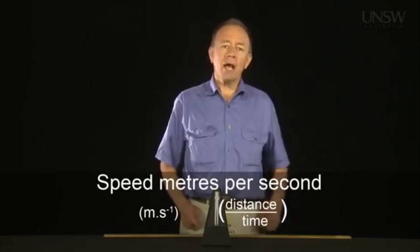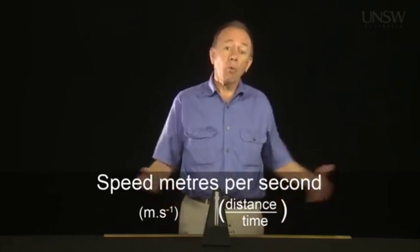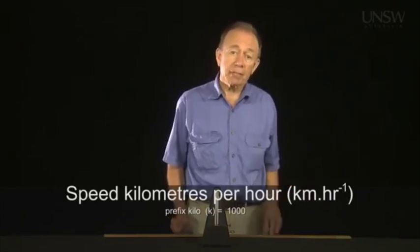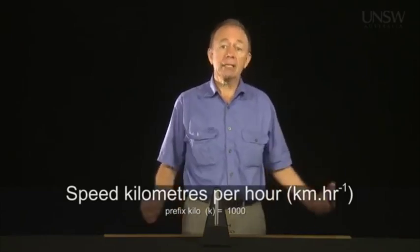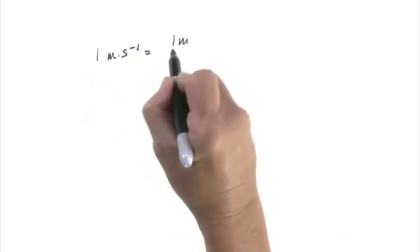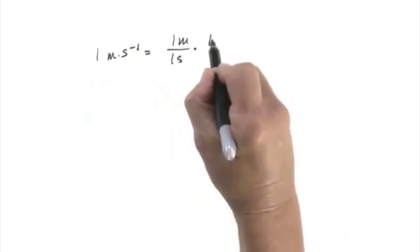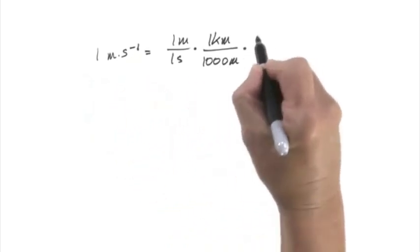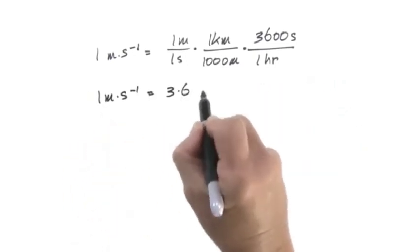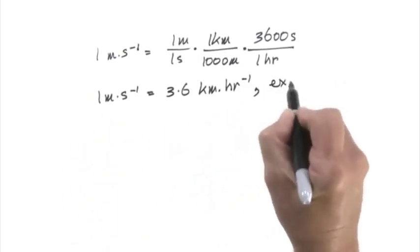The metre per second is a nice human-scale unit — you can walk at a couple of metres per second. But you probably know another unit for speed: kilometres per hour. Kilo is a prefix for a thousand, so a kilometre is a thousand metres, and an hour is 3600 seconds. Multiplying by one again, one metre per second equals 3.6 kilometres per hour. Exactly.